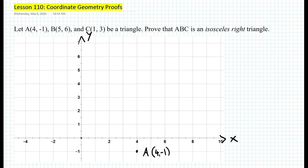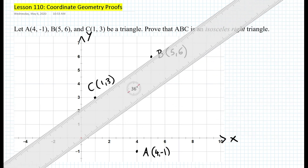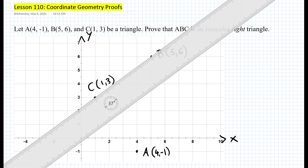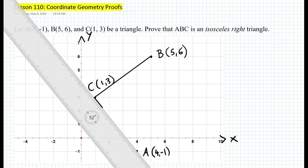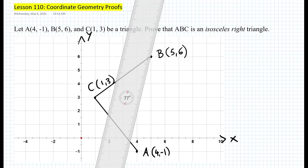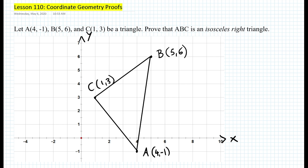Then we plot point B, which is (5, 6) — it's somewhere here. That is point B. We also plot point C, which is at (1, 3). Now we connect these points because they create a triangle. Get a ruler and connect the points. We now have segment AC and segment AB. The question is: how would you prove that this is an isosceles right triangle?